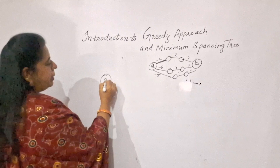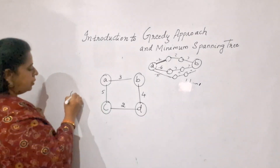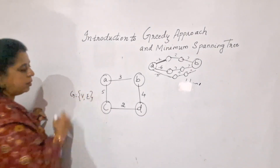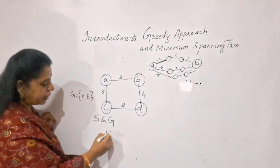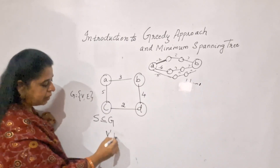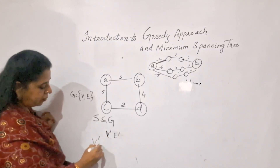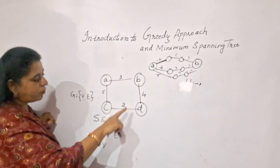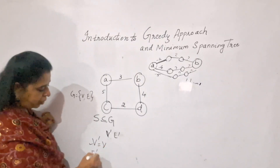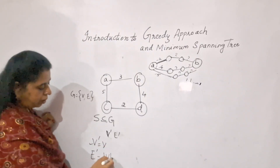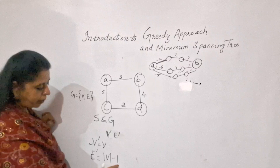Given a graph — let's take a simple graph with four vertices and some weights on its edges — a spanning tree is a subgraph of graph G. In the spanning tree, the set of vertices V' is always equal to V, meaning the spanning tree has the same number of vertices as the original graph. The number of edges E' in the spanning tree is always equal to the number of vertices minus one.